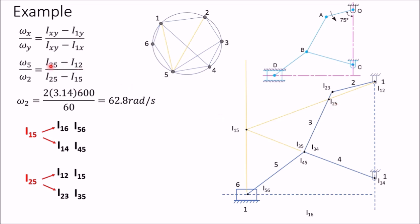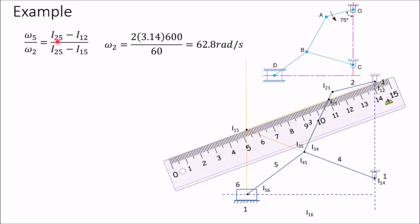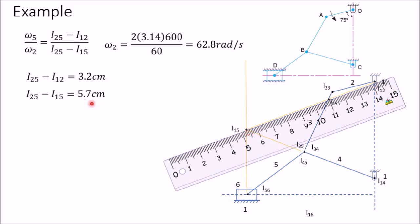Now all three instantaneous centers are obtained. Calculate ω₅: ω₂ is 62.8 rad/s. The distance I₂₅ to I₁₂ measures 3.2 cm, that is 32 mm. The distance I₂₅ to I₁₅ measures 5.7 cm. Substituting these values: ω₅ = ω₂ × (I₂₅ to I₁₂) / (I₂₅ to I₁₅) = 62.8 × 3.2 / 5.7 = 35.28 radians per second.